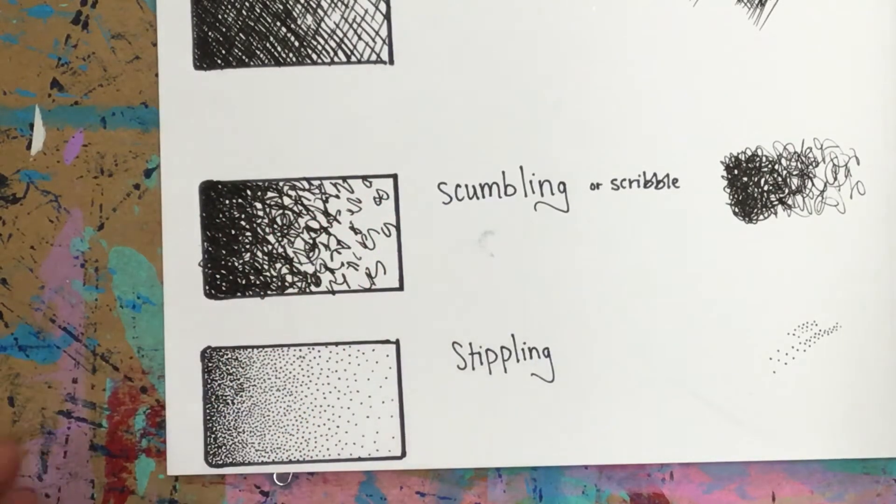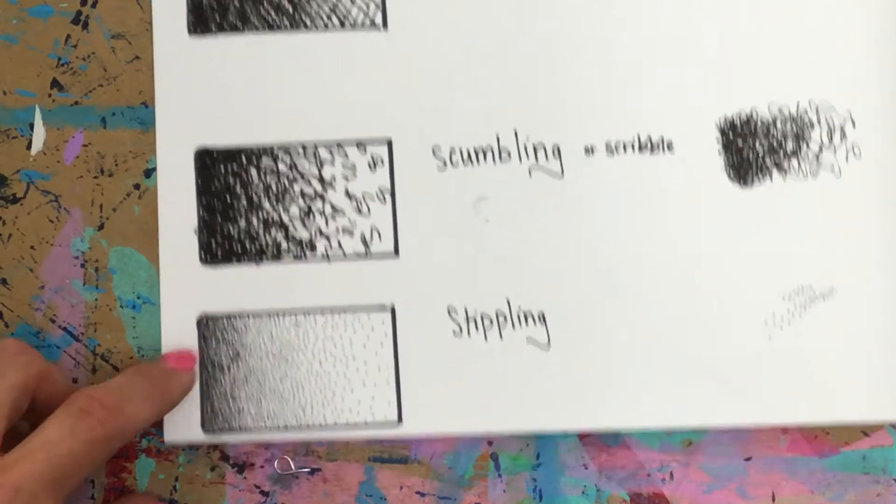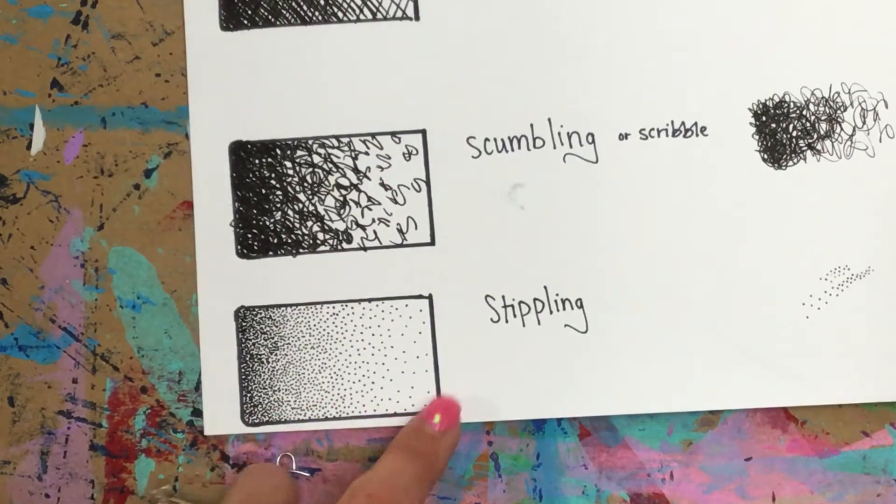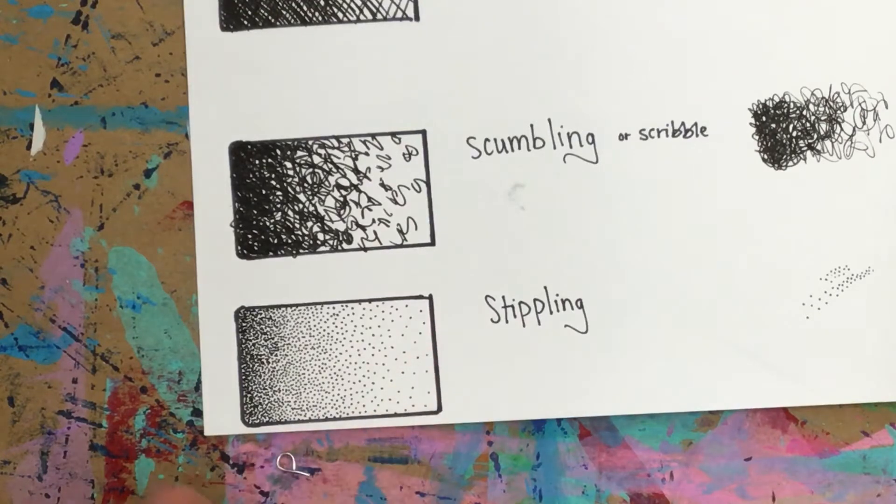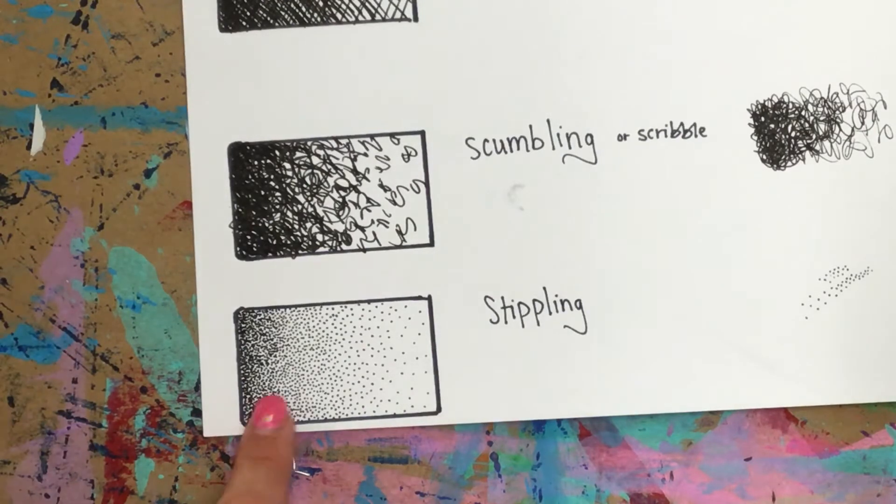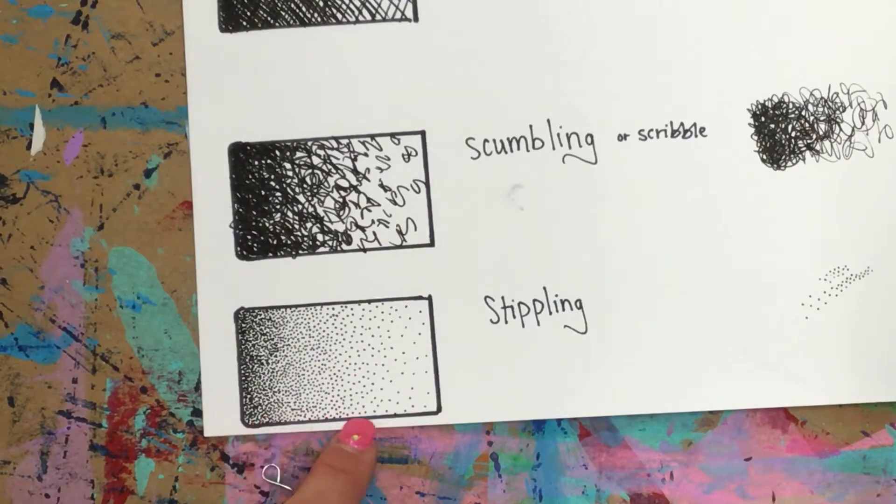The stippling goes pretty slow. This is adding dots. When you add these dots I would add it in a domino five pattern, so two and then one, so that you don't end up with a straight line. It takes a really long time to get them really dark.